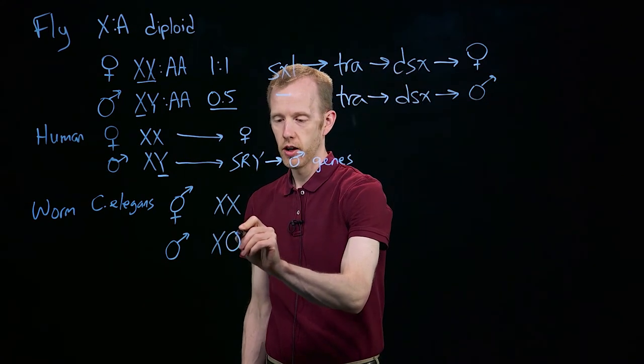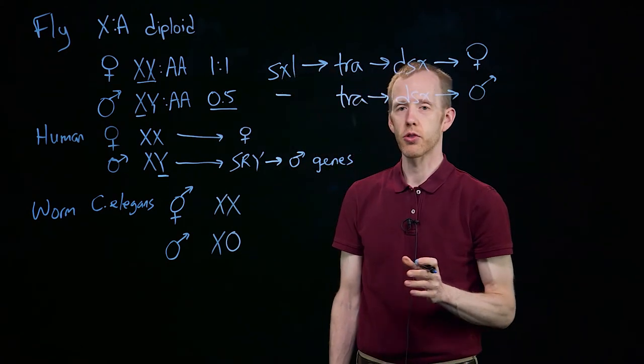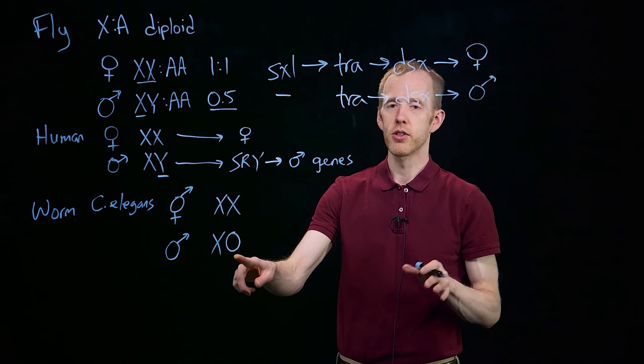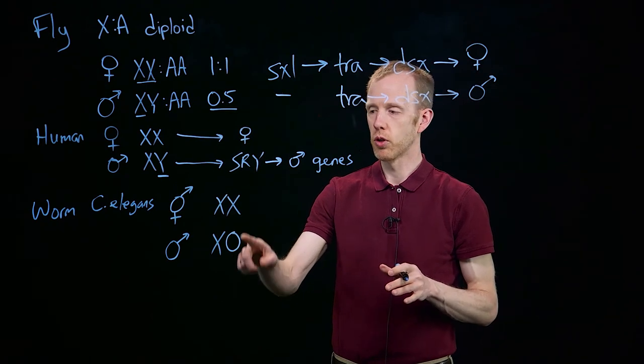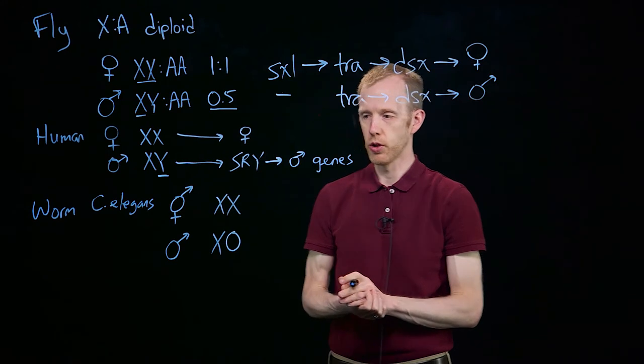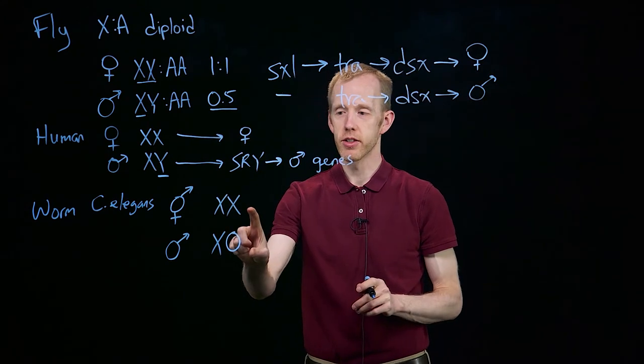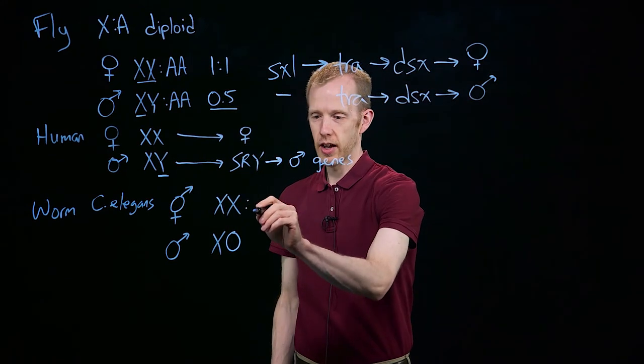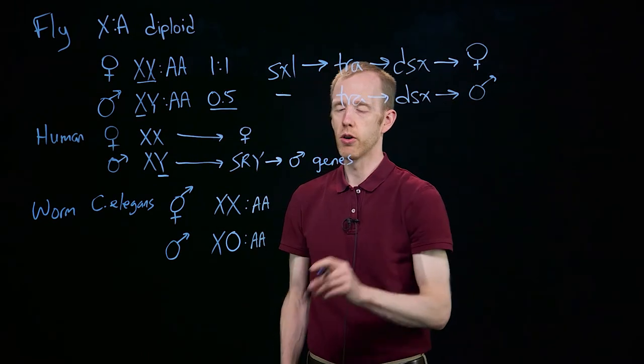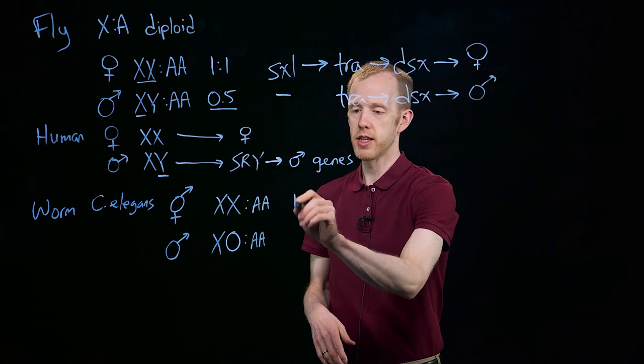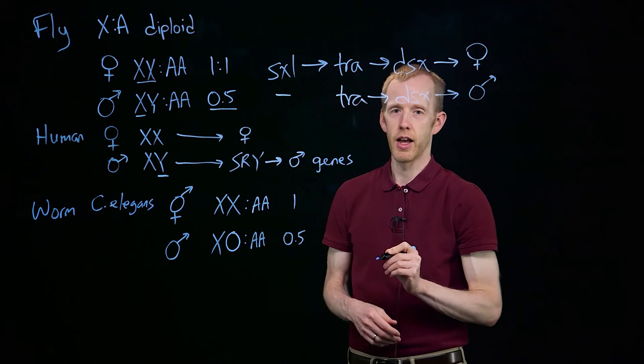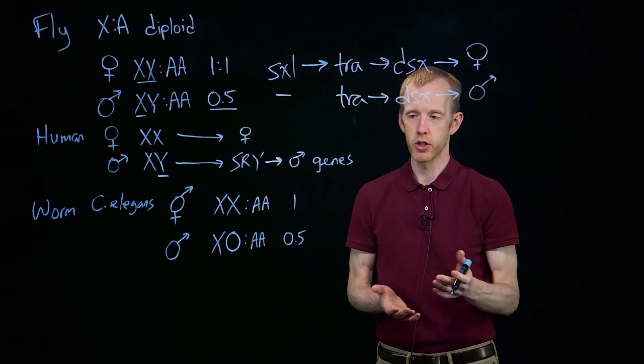They do not have a Y chromosome or a second X chromosome. So this null, 0, means there is no chromosome there. So hermaphrodites have two X chromosomes, males have one X chromosome. And this difference, again, is going to set up, just like in Drosophila, a difference in the ratio of X chromosomes to autosomes, where it's even in hermaphrodites, but males have half of an X chromosome for every autosome, essentially.